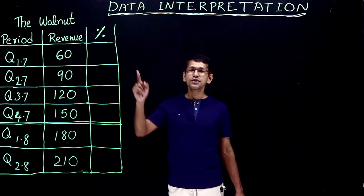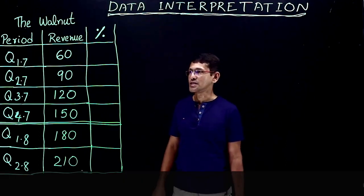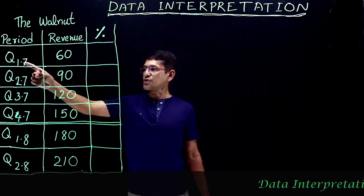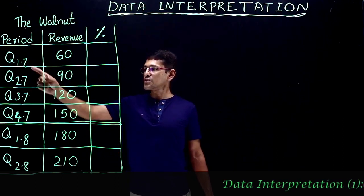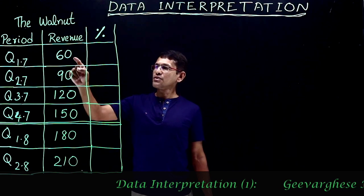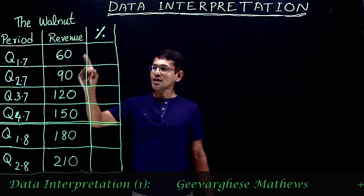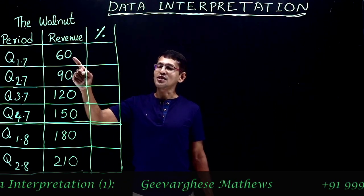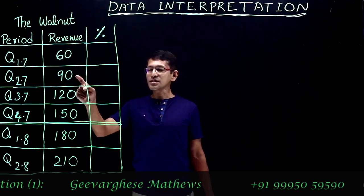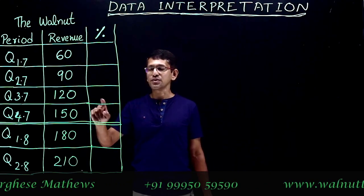Now how do you calculate the percentage in this case? From Q1 to Q2 — that's Q1 2017 to Q2 2017. The revenue is in thousands, so this is 60,000, this is 90,000, and this is 120,000.